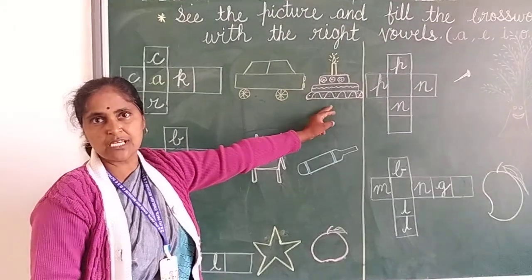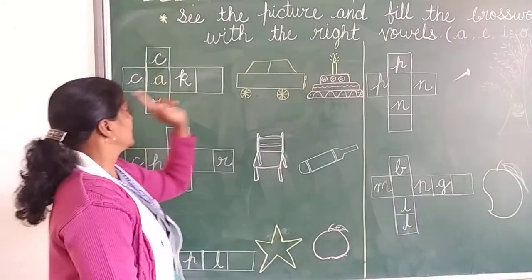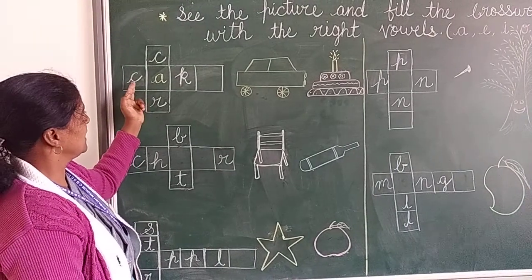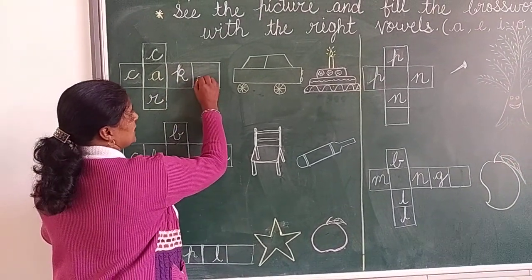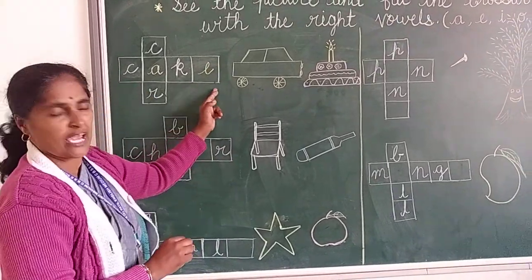Now see, what is this? This is a cake. What is the spelling of cake? C-A-K-E. Vowel letter E. Cake.